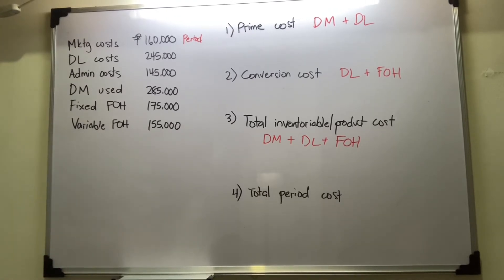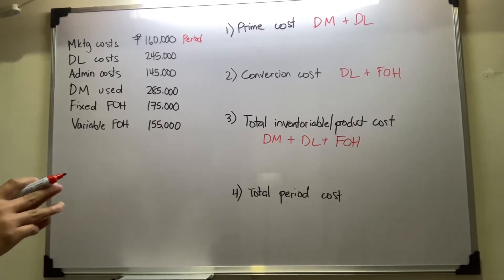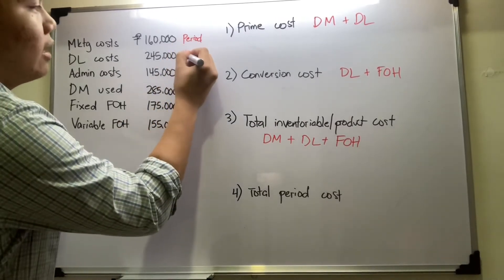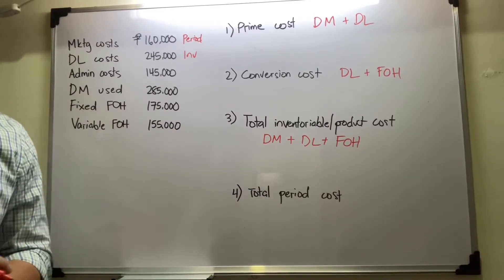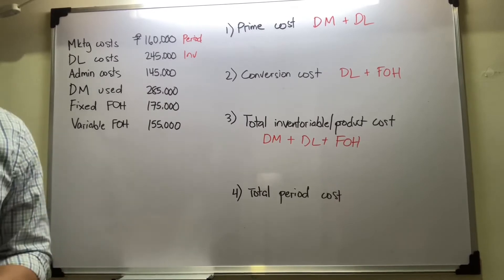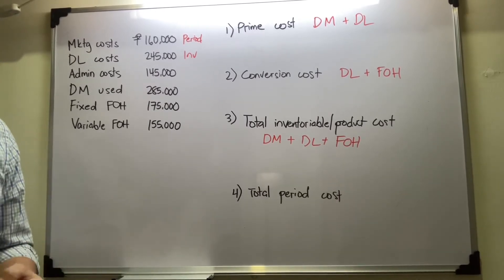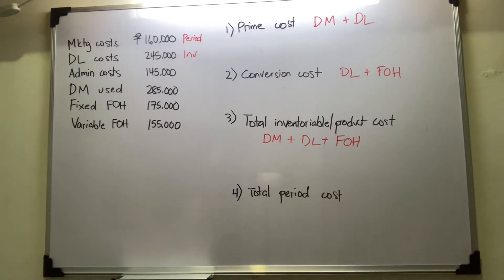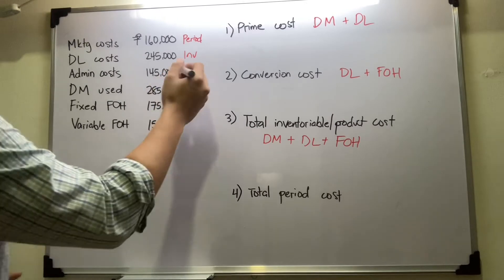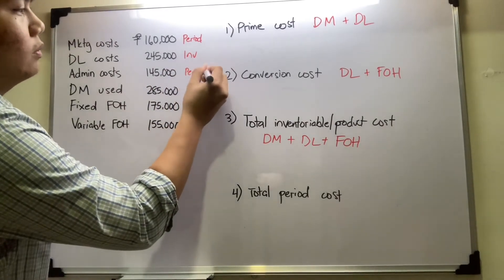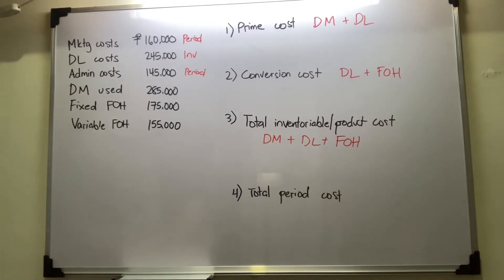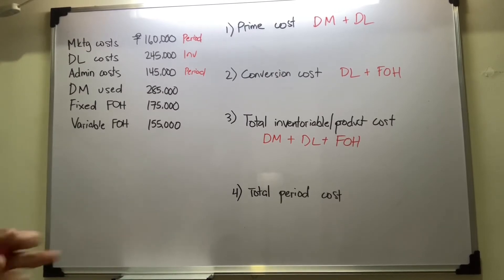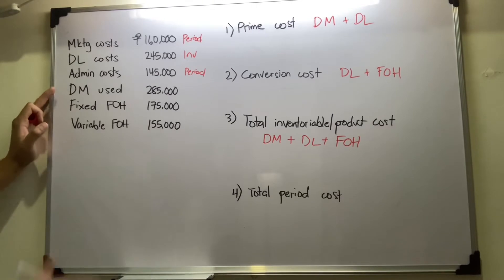For direct labor costs, this would automatically be an inventoriable cost because you can directly associate the labor incurred in producing the product. For administrative costs — such as the executive's salary or janitorial services — this has nothing to do with producing the product, so it would be classified as period cost. For direct materials used, it is very obvious: you can see the wood in a chair or the glass in a mirror, so direct materials used would be inventoriable.